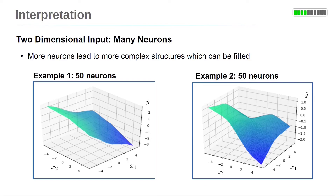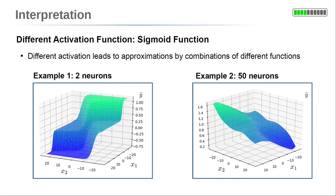Two examples with 50 neurons are shown. With more neurons, more complex functional relations can be approximated by a neural network. We can do similar considerations for different activation functions — here using a sigmoid activation instead of ReLU. On the left side, the result for two neurons is sketched, giving two two-dimensional sigmoid functions. On the right side with 50 neurons, the output for many neurons looks more similar to the output with ReLU activations.